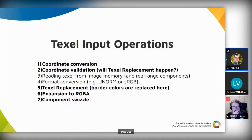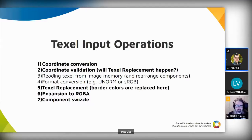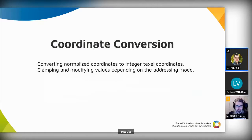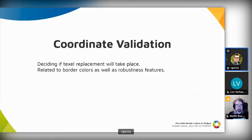I've simplified and removed some steps, but if the border color needs to be applied, the steps we are interested in are: step five, where the border color is applied, which comes before step seven, where the image view swizzle is applied. Step one is coordinate conversion, which includes converting normalized coordinates to integer texture coordinates and clamping or modifying those values depending on the addressing mode. Step two is validating the coordinates, where you decide if texture replacement takes place — and that texture replacement will use the border color in some cases.